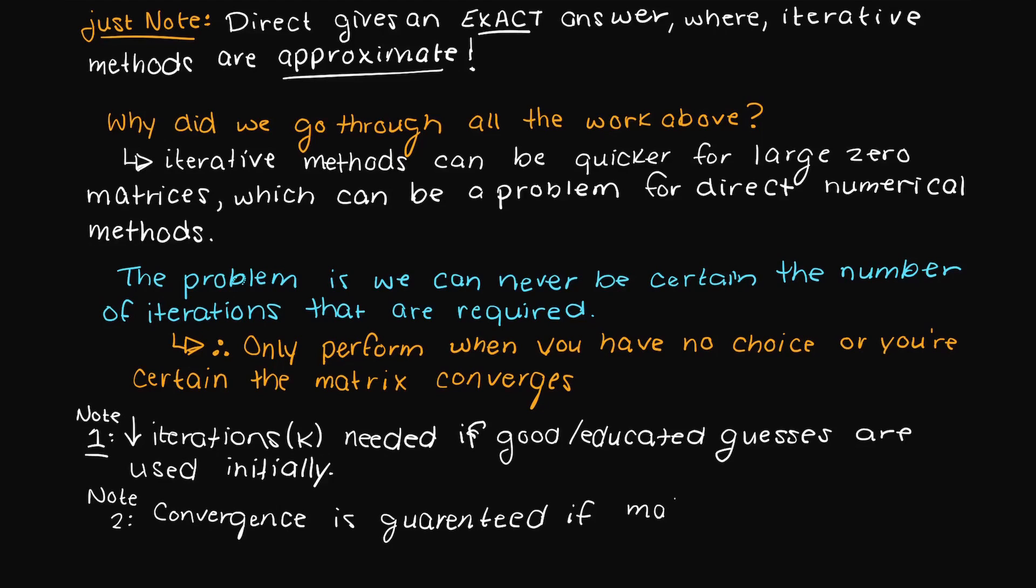And conversion is guaranteed, meaning that we will achieve a unique solution if the matrix is diagonally dominant, which is going to be the next video. So check that out if you don't know what that means.